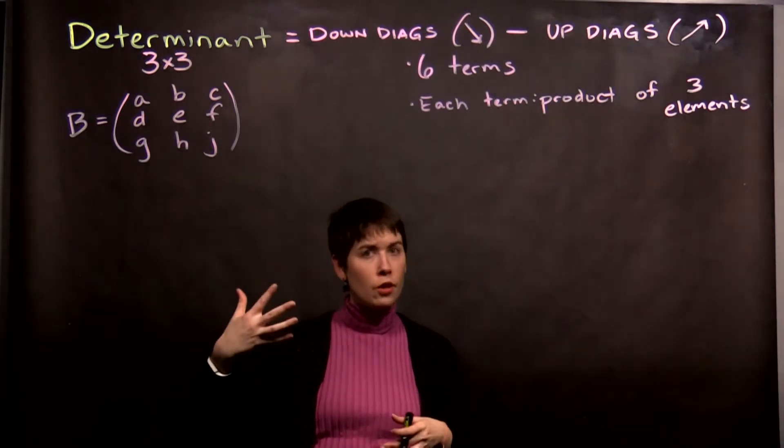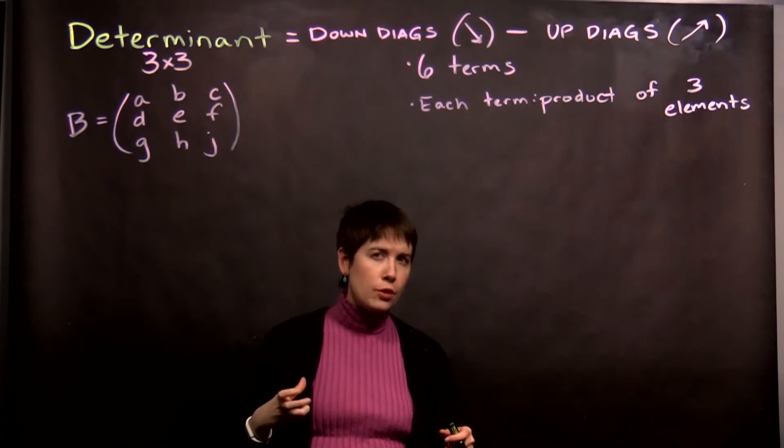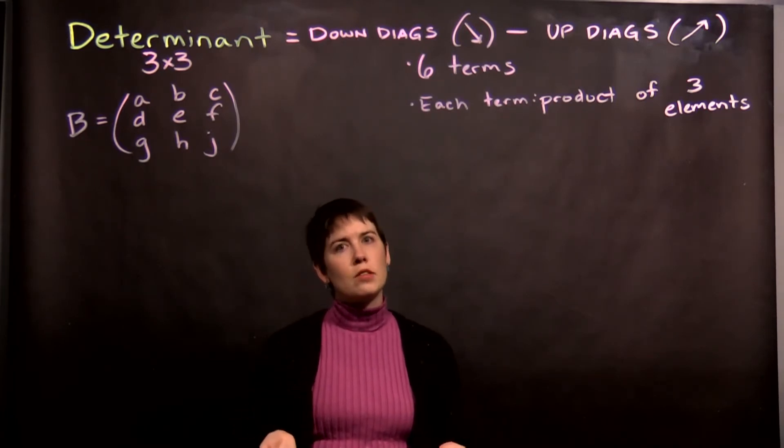I'm going to do a concrete example with this 3x3 matrix here. Remember, in the end, our determinant should be a scalar, but it might be a complex scalar.